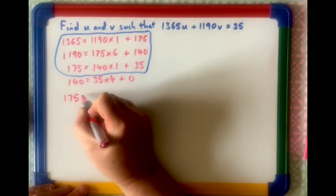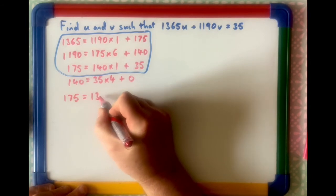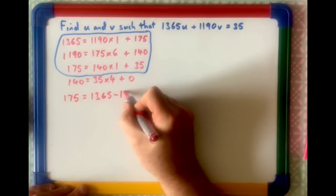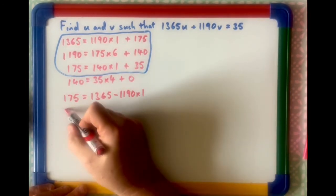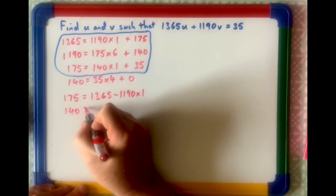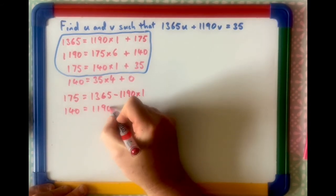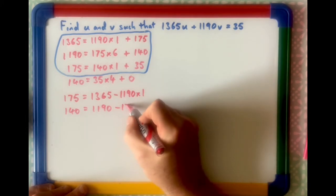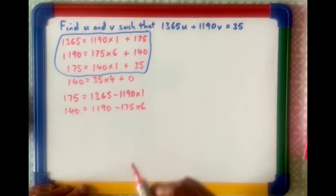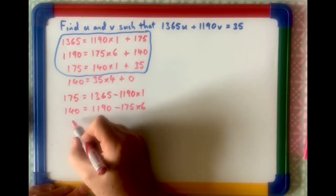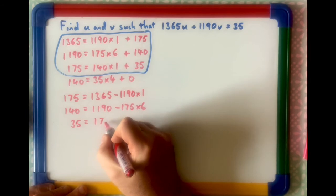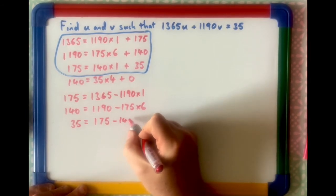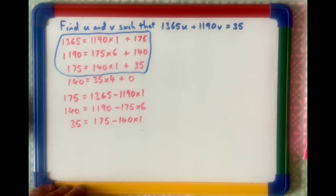If we look at the top one here, that would be 175 equals that, take away that. So, 175 equals 1365, take away 1190 times 1. The remainder there is 140, so 140 equals 1190, take away 175 times 6. And then the last bit we do is 35, which is the number we're after in this thing, equals 175, take away 140 times 1.